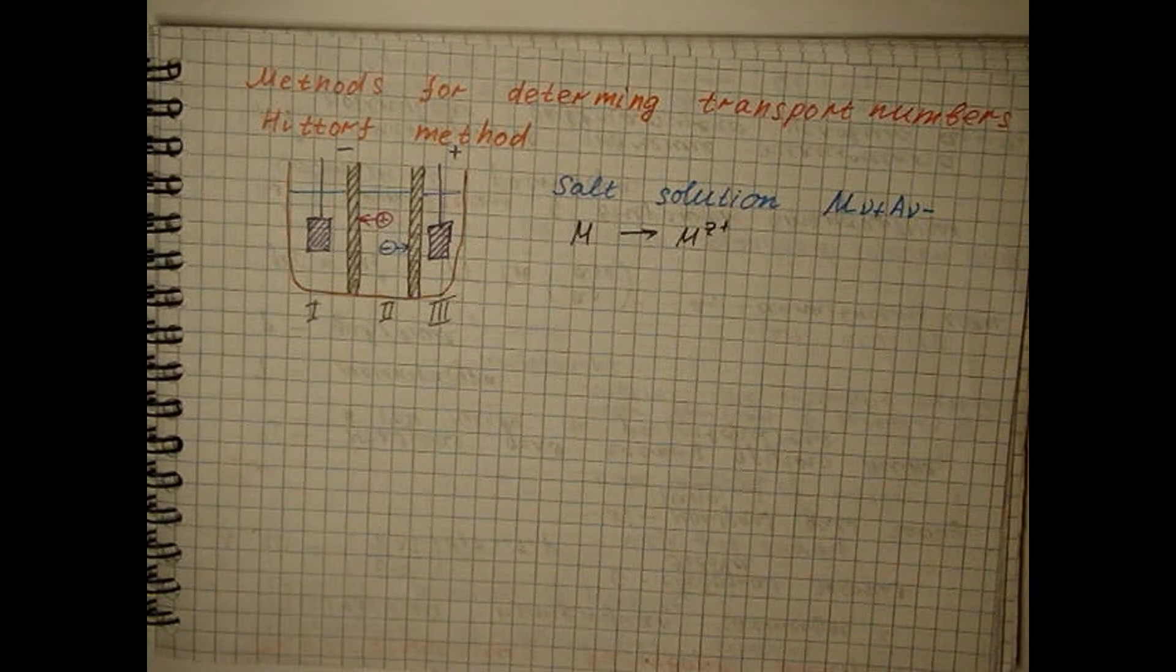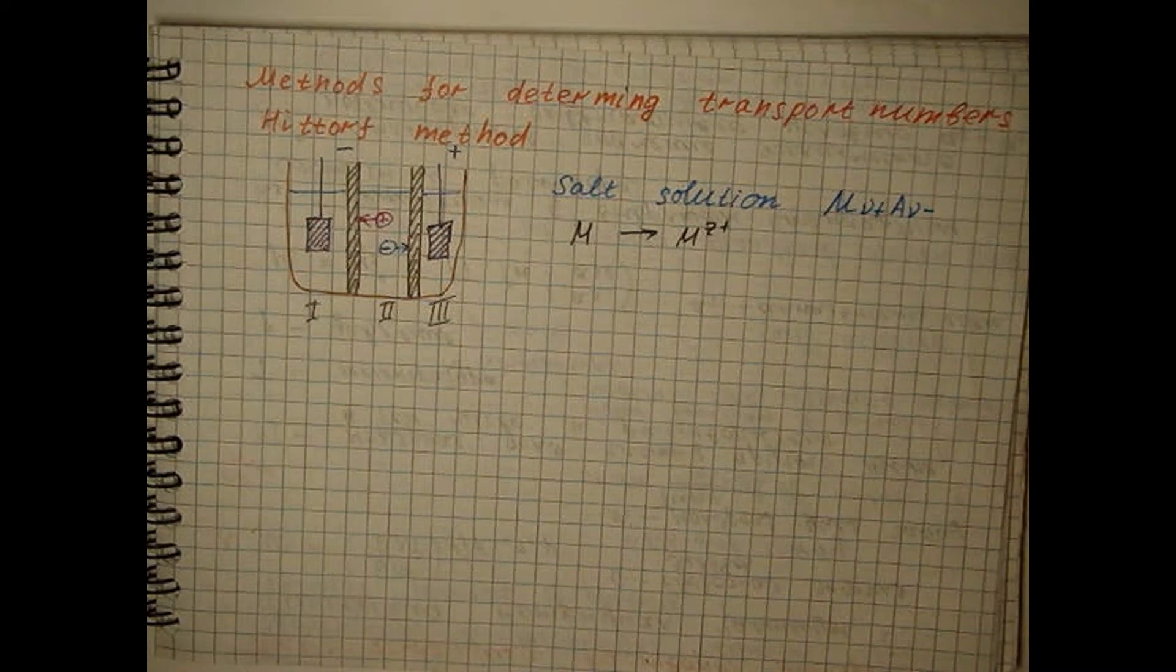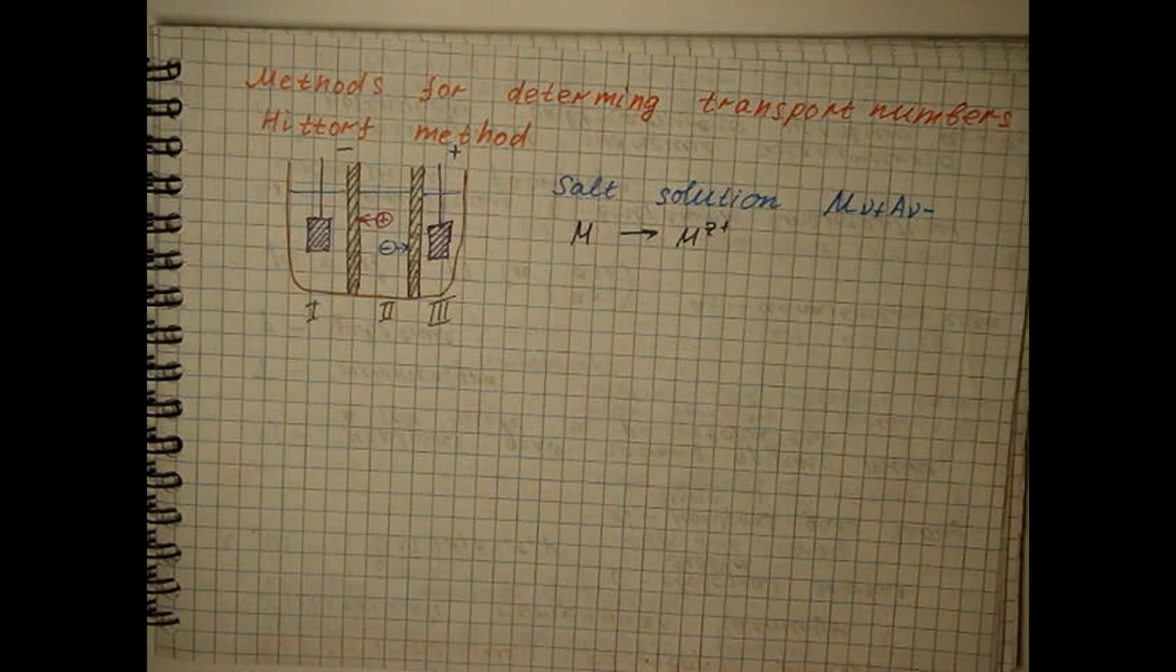Consider what will happen in the first compartment adjacent to the cathode after passing one Faraday of electricity through the system.